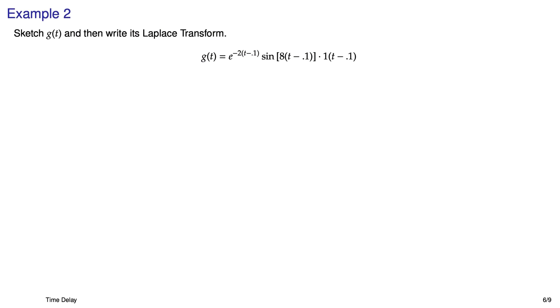So let's go on to example two. Finally, we're going to take a Laplace transform. Let's sketch out g of t and then go ahead and do the Laplace transform. It's just time delayed by 0.1 seconds. If you take a look at this function, you can see that every occurrence of t is really a t minus 0.1.